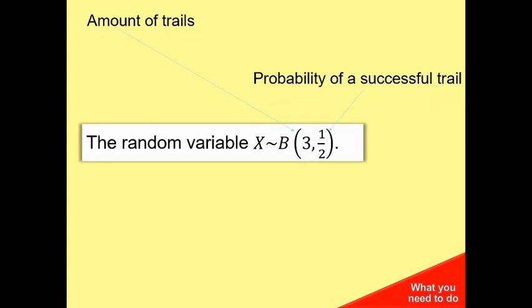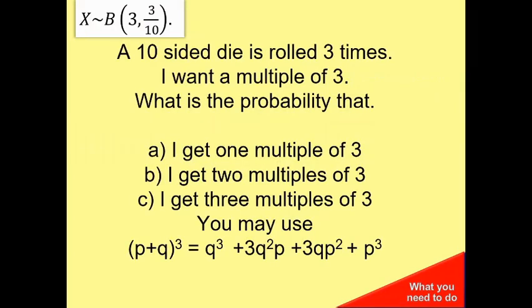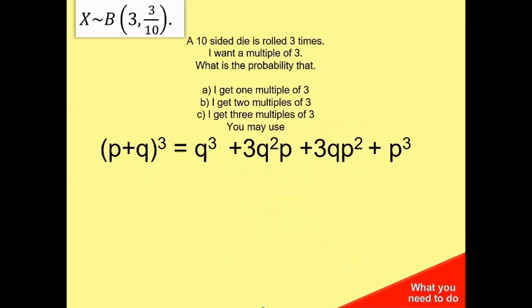So for example, this one here would be if I wanted to flip a coin and I want a heads successful trial. This is saying that I'm going to flip a coin three times. A 10-sided die is rolled three times. I want a multiple of three. What's the probability I'll get one multiple of three, two multiples of three, three multiples of three?